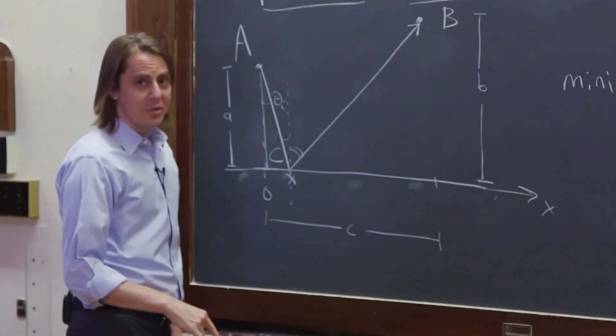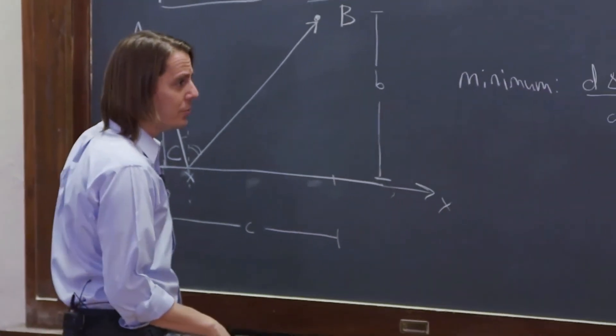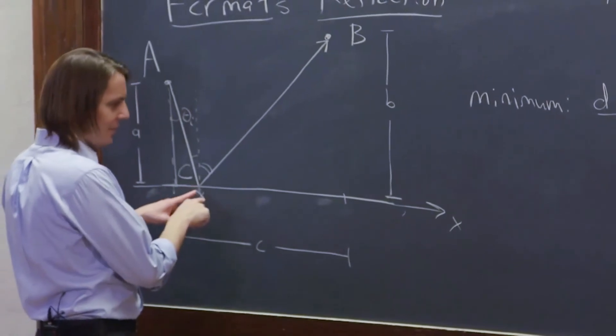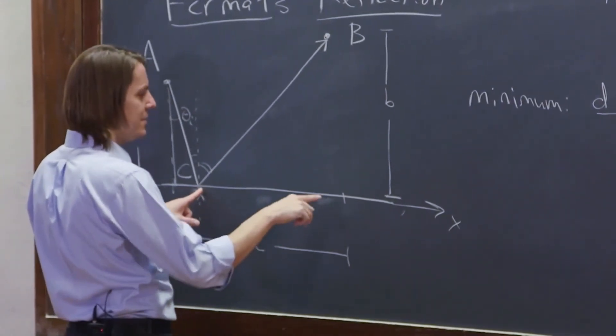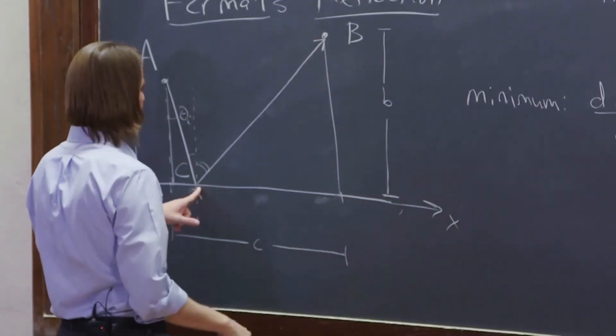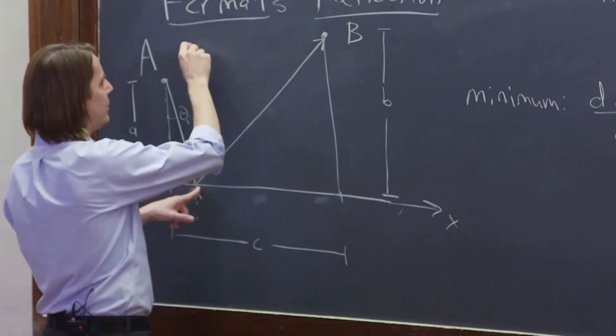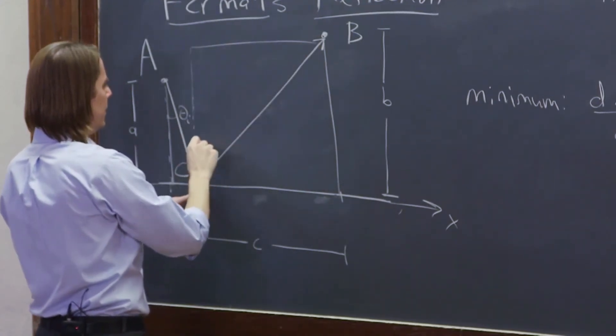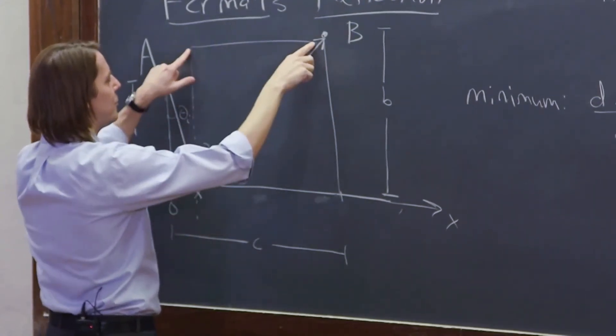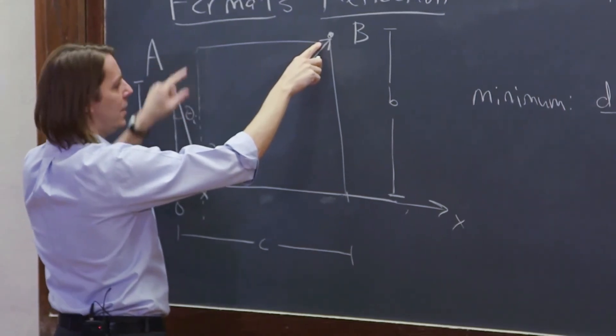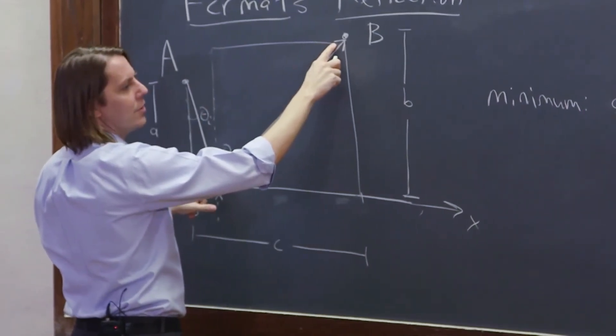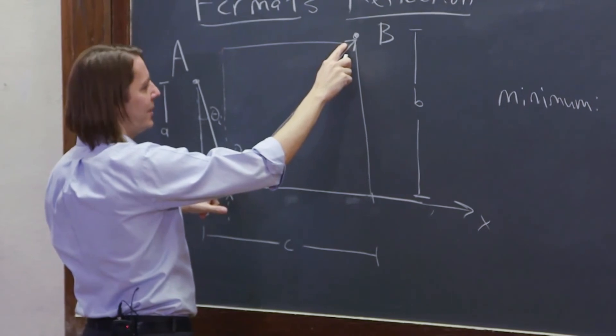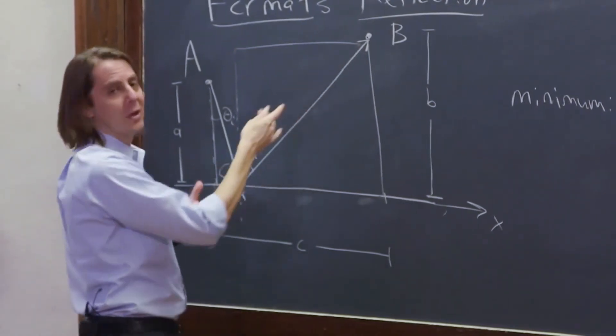And then this other one, maybe you can see where we're headed here, this one is equal to C minus X, which is this part of, actually we want this triangle here. So there's C minus X over here. And then there is the square root of B squared plus C minus X quantity squared, right? So again, we have a sine.